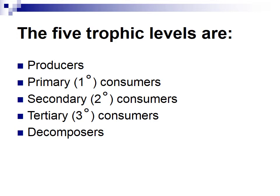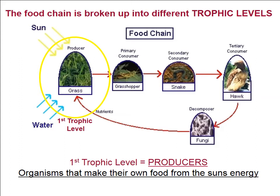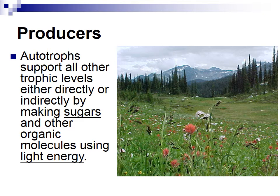So it's broken up into different trophic levels. Producers get energy from the sun. You've got your primary consumers — the grasshopper. Secondary consumers — the snake. Tertiary consumer — the hawk. And your decomposers. The first trophic level are the producers — organisms that make their own food from sunlight. Plants and algae are examples. Producers are autotrophs that support all trophic levels, directly or indirectly, by making sugars and other organic molecules using sunlight.